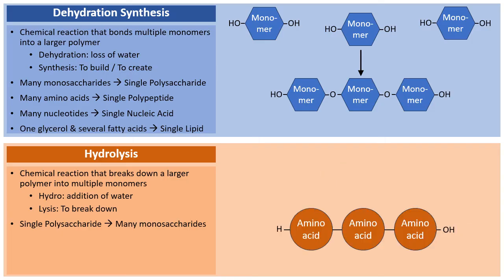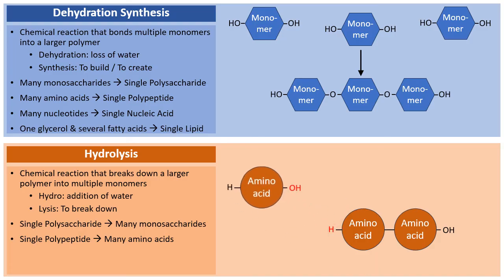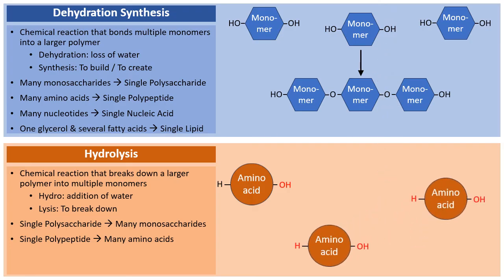For proteins, a single polypeptide can be broken down into individual amino acids. With the addition of a water molecule, the amino acid on the left is broken apart from the others. Adding another water molecule breaks the remaining amino acids apart. We started with one polypeptide and now have three individual amino acids — that is a hydrolysis reaction.